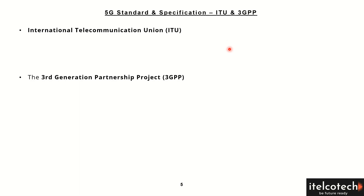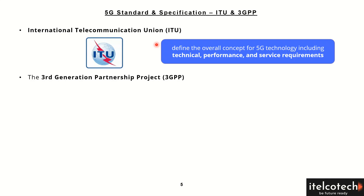Let's understand the standard bodies working on evolving the 5G ecosystem — two of them are ITU and 3GPP. The International Telecommunication Union continuously defines the overall concept behind 5G technology, which includes technical performance as well as service requirements. We understand the different design goals and key deliverables defined by ITU in terms of speed, latency, and other key performance indicators.